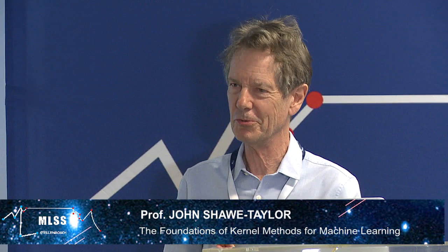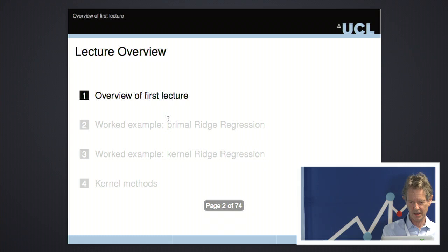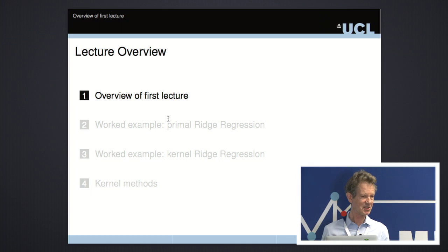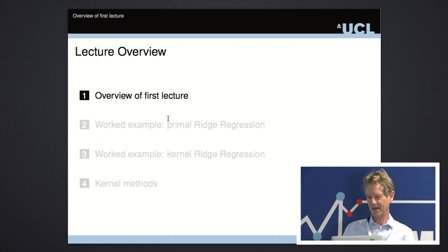I'm also the director of that centre, and one of the things we're establishing is a global network of excellence, somewhat modelled on the Pascal network that Ulrich referred to, but it's called Nexus — standing for a network on artificial intelligence and knowledge for sustainable development. I'll dive in, and I'm going to be giving three lectures, so I'm just going to give you an overview of the first lecture.